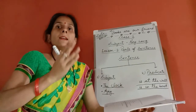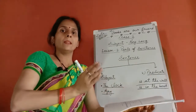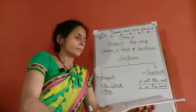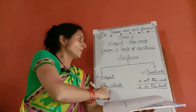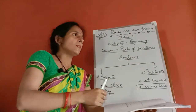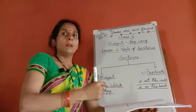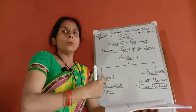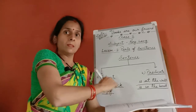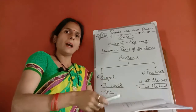Now we have to understand how to find the subject and the predicate. We ask ourselves a question about the sentence. When we search using that question, we will find our noun or pronoun — and that gives us the subject. Let's see a little example.